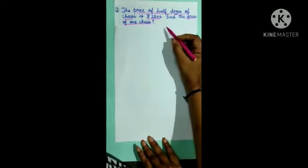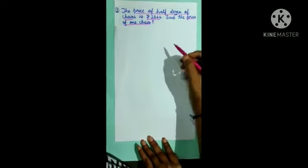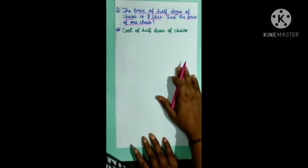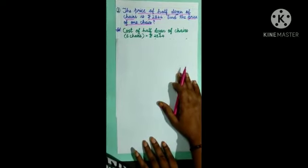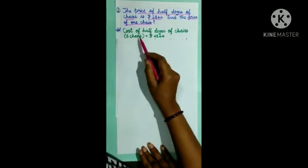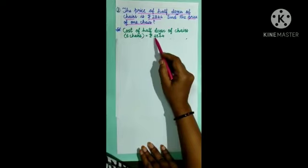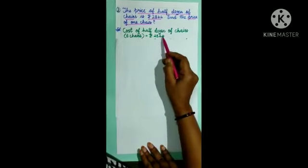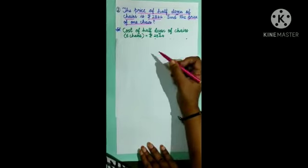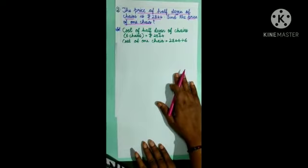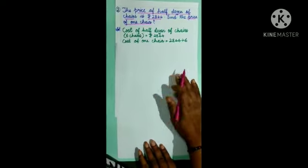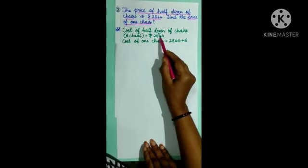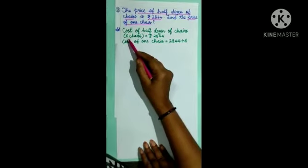Now we will frame statements. First statement: Cost of half a dozen of chairs (6 chairs) is Rs. 2844. Second statement: Cost of 1 chair is equal to 2844 divided by 6.